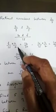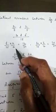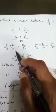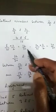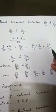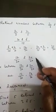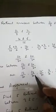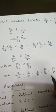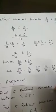Here we multiply by 2: 6 by 15 becomes 12 by 30 and 10 by 15 becomes 20 by 30. So numbers between 12 by 30 and 20 by 30 are 13 by 30, 14 by 30, 15 by 30, 16 by 30, and 17 by 30. I think you are now able to understand this method.